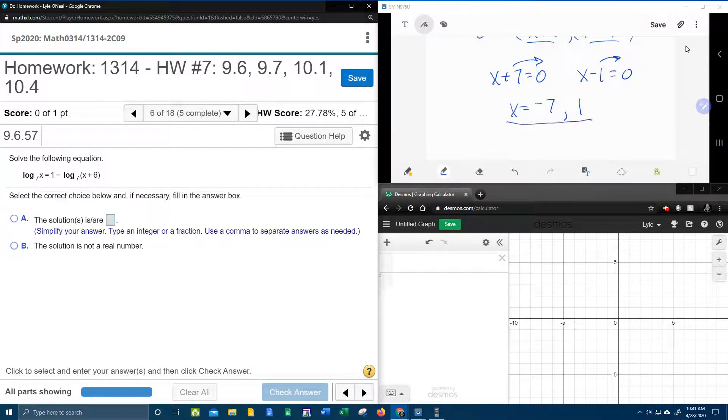And I do need to check and make sure that both of those are valid. So going back to the original problem, we have log base 7 of x. And if I replace x with negative 7, notice right there that's an instant fail. I cannot take the log of a negative number. So I don't even need to write the rest of the equation down. There's an instant fail right there. And so negative 7 is not going to work.